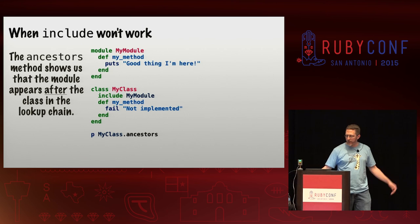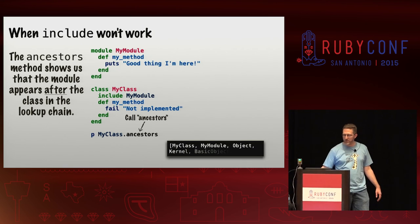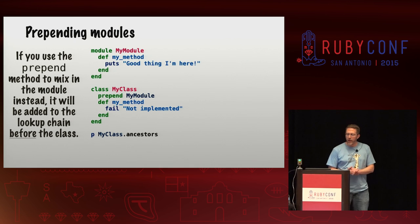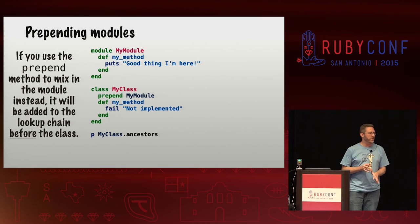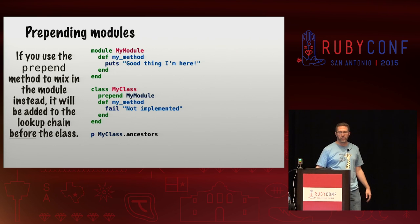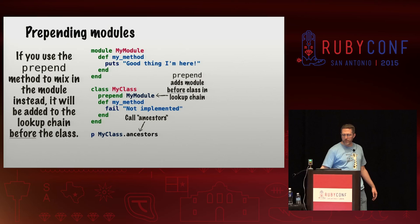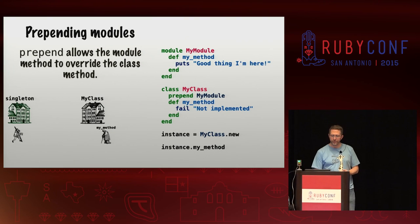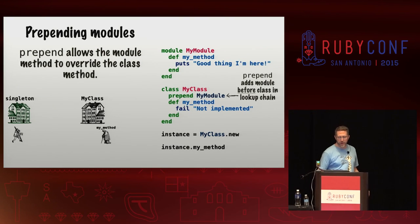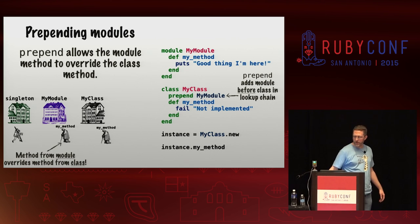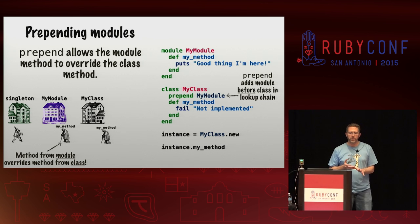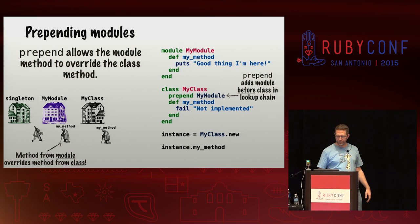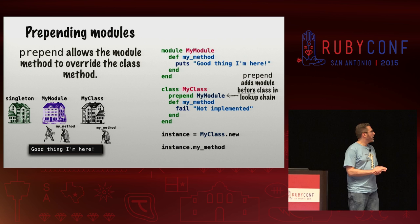If you use the prepend method instead of include to mix the module in, that'll add it to the lookup chain before the class. If we call ancestors after using prepend, you can see the difference: my module appears first, followed by my class. Prepend allows the module method to override the class method. Using prepend makes the module appear first in the lookup chain, causing my method on my module to override my method from my class — it finds that first, invokes it, and no exception gets thrown.